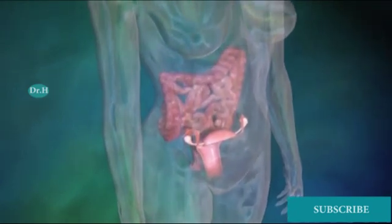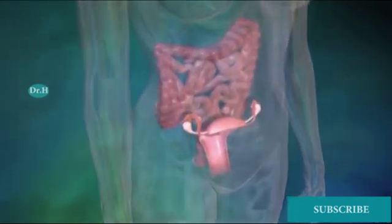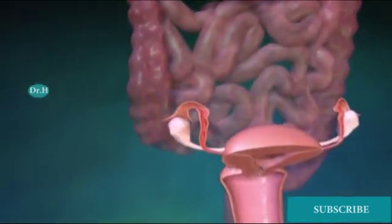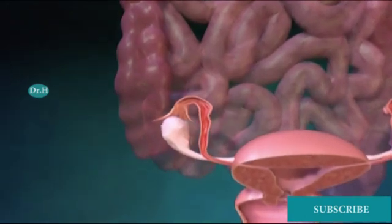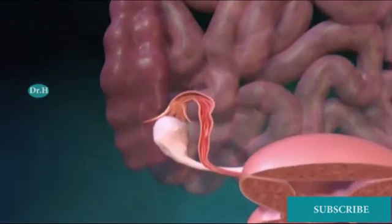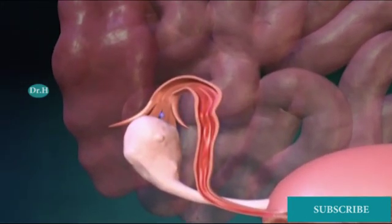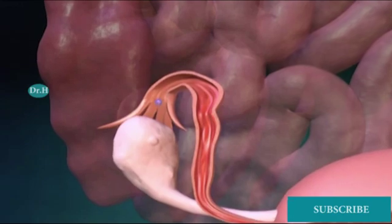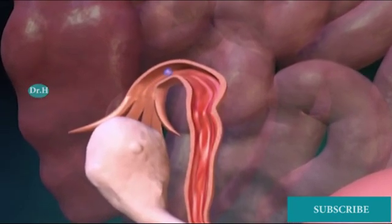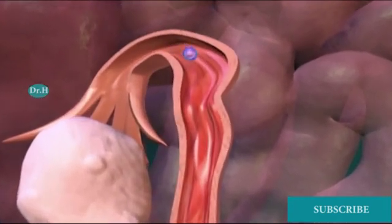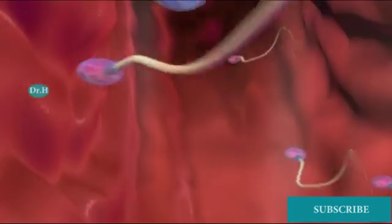During ovulation, an ovum or egg is released from a woman's ovary each month. Fimbria — small finger-like projections at the end of the fallopian tube — capture the egg and direct it inside. It is here, inside the fallopian tube, where conception usually occurs.